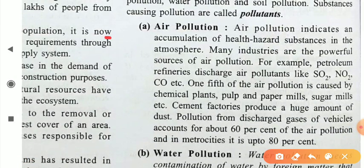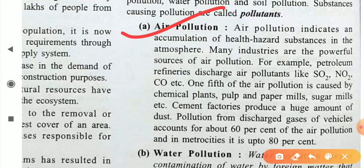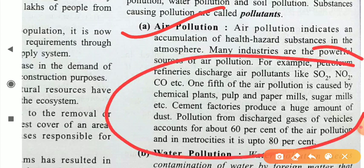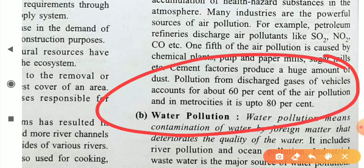The first type is air pollution. Many industries and automobiles are responsible for air pollution because they produce toxic materials and gases like SO2, NO2, and CO2. One-fifth of air pollution is caused by chemical plants, pulp and paper mills, sugar mills, etc. Cement factories produce a huge amount of dust. Pollution from discharge gases of vehicles accounts for about 60% of air pollution, and in metro cities it is up to 80%.